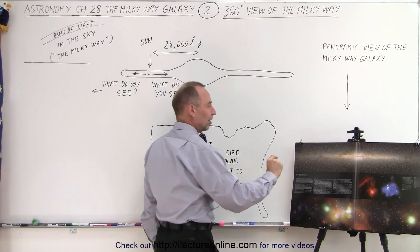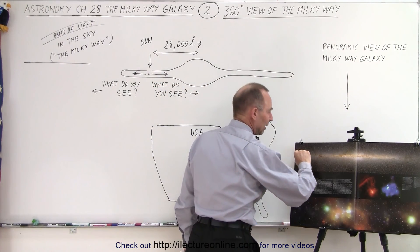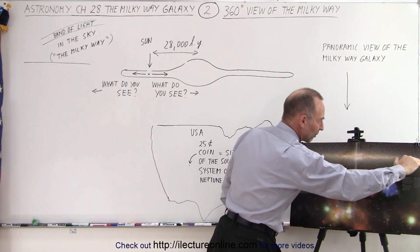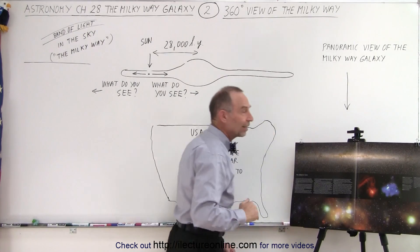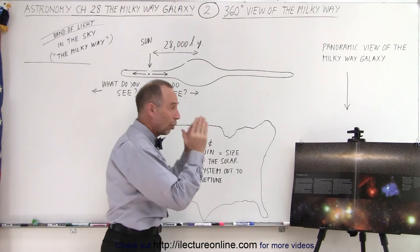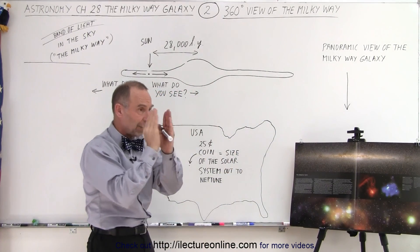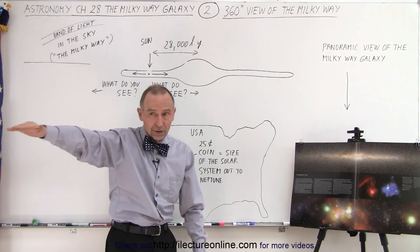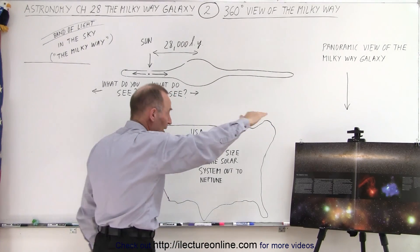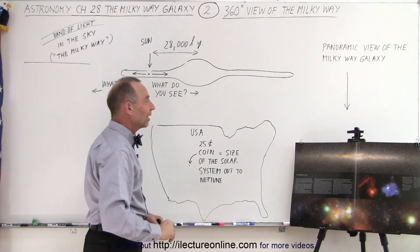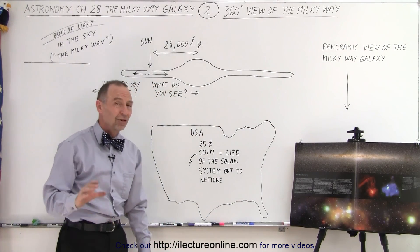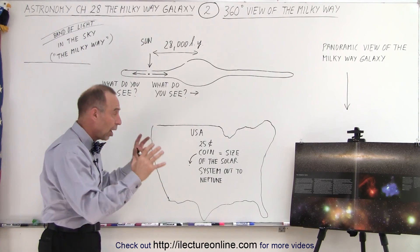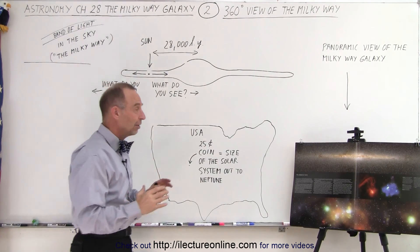Now you know that if you see this type of picture with a panoramic view of the galaxy, it's simply a whole bunch of pictures spliced together as you go all the way around in a 360-degree panoramic view of the galaxy.